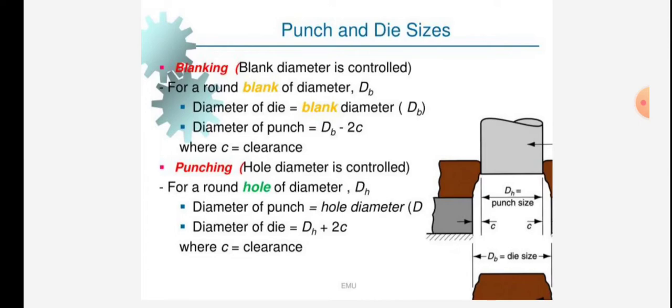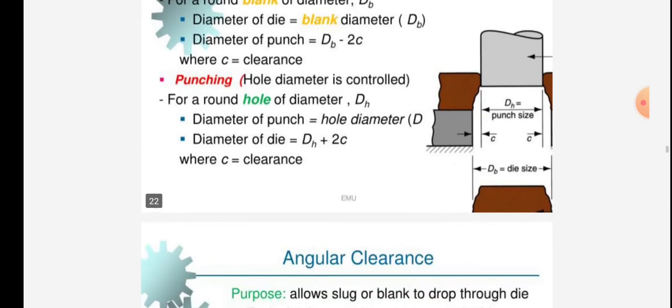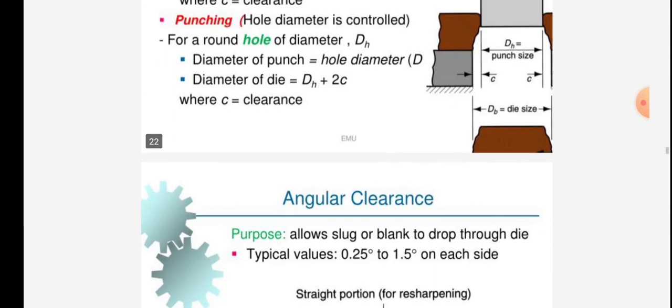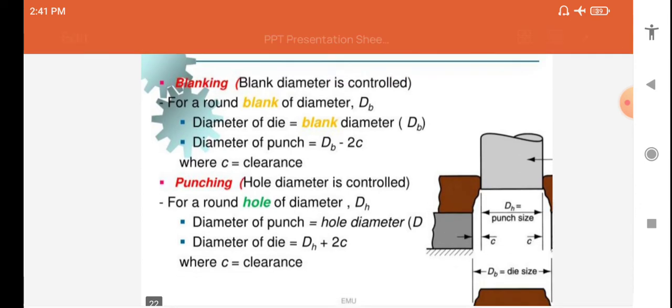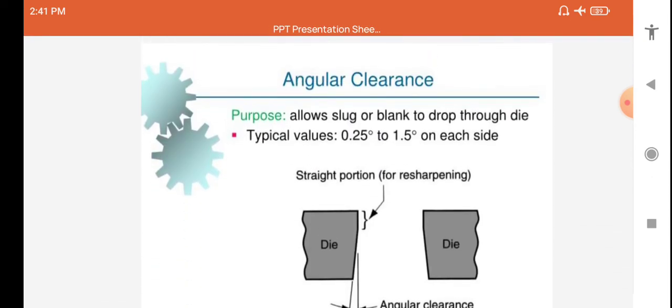Punching: hole diameter is controlled. For a round hole of diameter DH, diameter of the punch equals hole diameter DH. Diameter of the die equals DH plus 2C, where C is the clearance.